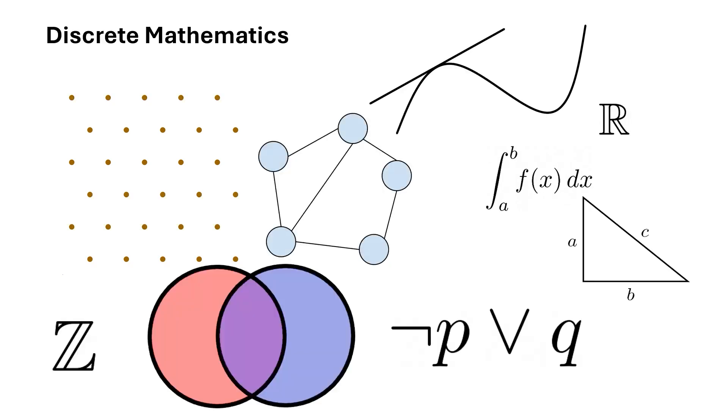Discrete mathematics. Discrete mathematics is the study of mathematical structures that are considered discrete, as opposed to continuous ones that are found in the real numbers, calculus, or most types of geometry. This includes the integers, graphs, sets, and logic.